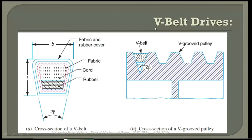The V-belt is generally used in workshops or factories where you want to transmit more power. The distance between the shafts is also very less — we can go for V-belt drives. When the distance between the shafts is almost 8 to 10 meters, we go for flat belt drive. But when the distance is less than 4 meters, you can go for V-belt drive. More than one V-belt is used so that the failure of one V-belt may not stop the working of the machine, ensuring continuous operation.